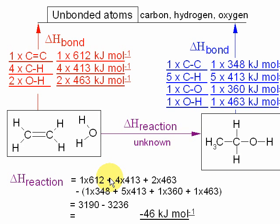So as an example, ethene and water may react to give ethanol. To work out this enthalpy change, we can add up the bond strength of the C=C double bond, the four C-H bonds, and the two O-H bonds. That's these values here, and that would be the enthalpy change to give the unbonded atoms of carbon, hydrogen, and oxygen.